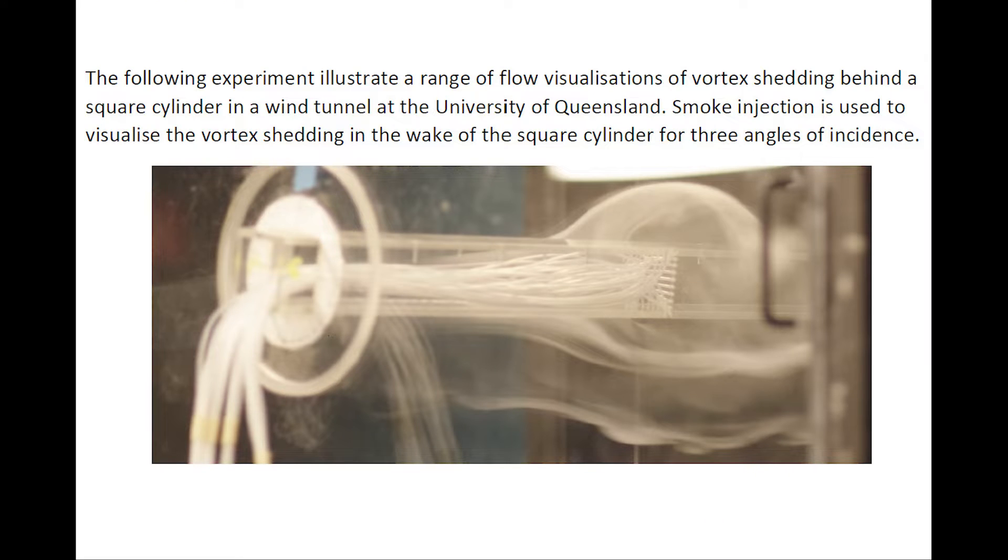The following experiment illustrates a range of flow visualization of vortex shedding behind a square cylinder in a wind tunnel at the University of Queensland. Smoke injection is used to visualize the vortex shedding in the wake of the square cylinder for three angles of incidence.